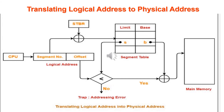In the pictorial representation of logical-to-physical address translation, the CPU generates a logical address divided into segment number and offset. STBR helps navigate to the segment table, where we find the corresponding limit and check whether the offset is less than the limit. If the condition is false, it generates a trap (invalid request). If the condition is true, we add the offset to the base value to get the physical address and access it in physical memory.